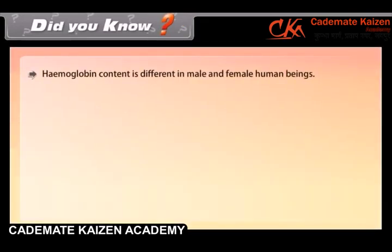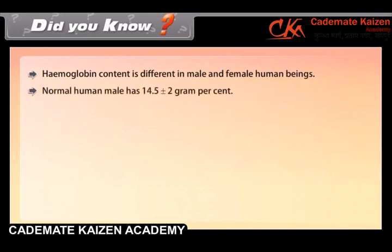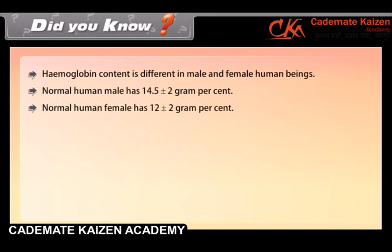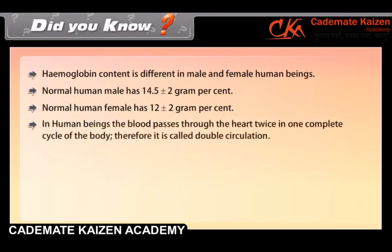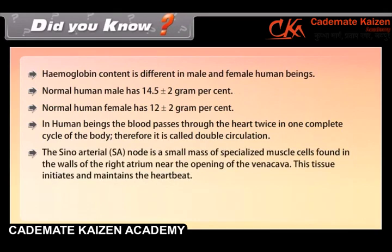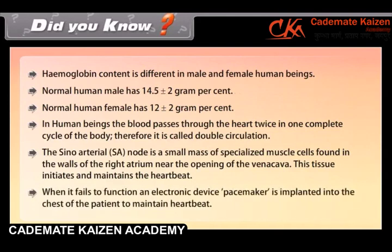Hemoglobin content is different in male and female human beings. Normal human male has 14.5 ± 2 gram percent. Normal human female has 12 ± 2 gram percent. In human beings the blood passes through the heart twice in one complete cycle of the body, therefore it is called double circulation. The sino-atrial (SA) node is a small mass of specialized muscle cells found in the walls of the right atrium near the opening of the vena cava. This tissue initiates and maintains the heartbeat.